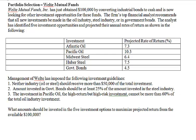To ensure diversification, we are given some guidelines to follow. The first guideline says neither industry — oil or steel — should receive more than $50,000 of the total investment. So you don't want to put too much money into any one industry.